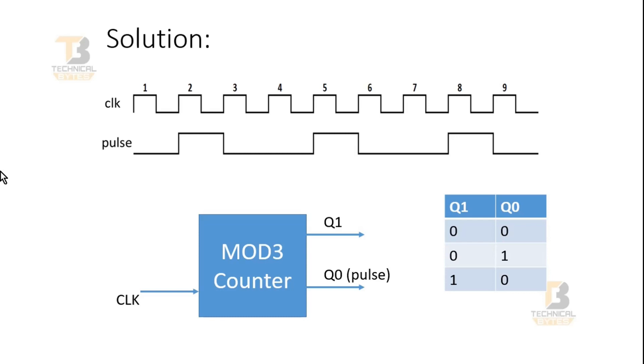Here we will simply use a mod 3 counter. And it has two outputs, Q1 and Q0. And its truth table is like this. Firstly, it goes to 00. Then the next state is 01. And the next one is 10. And then it rolls back to 00.